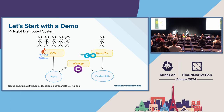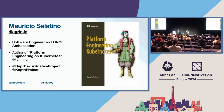My name is Mauricio Salatino. I'm a software engineer at Diagrid, working on the Dapr project and the Knative project. I wrote a book titled Platform Engineering on Kubernetes — I gave away some copies for the book club, so feel free to check it out. I'm also involved with different open source projects in the CNCF space and outside. If you're interested in these topics, please check the book out.